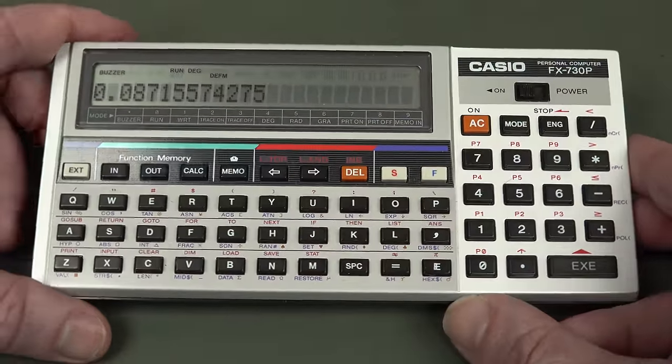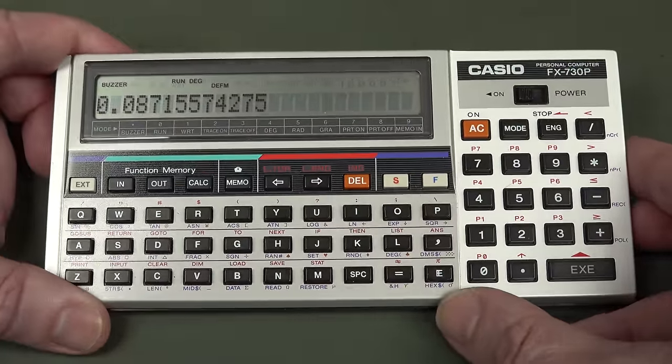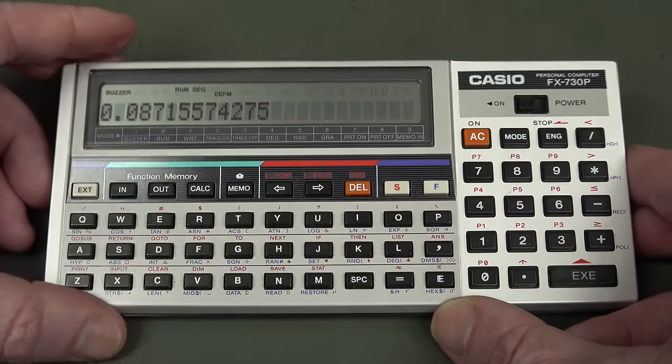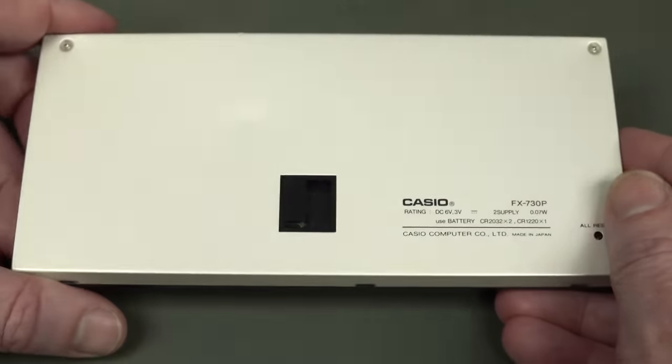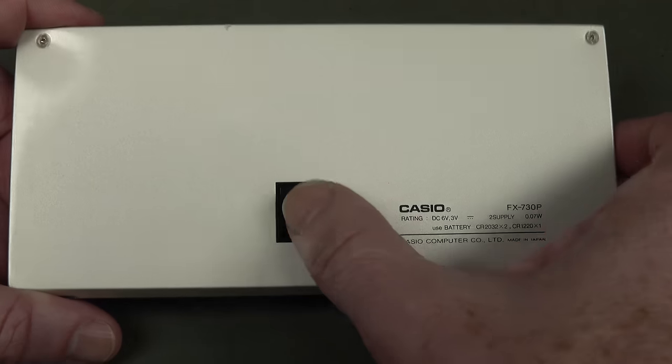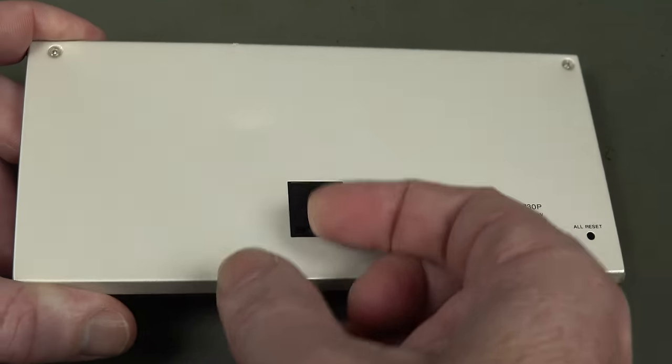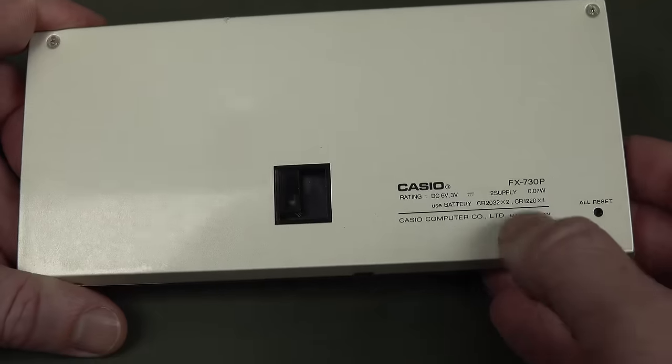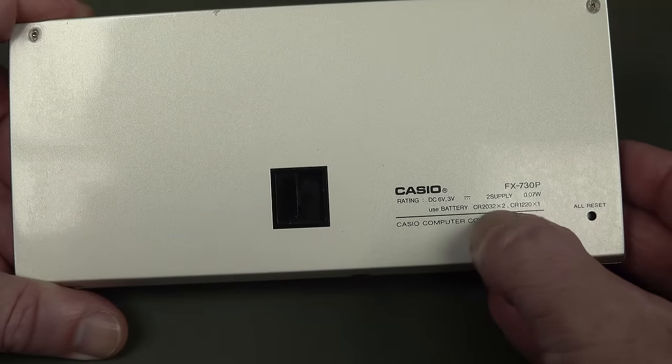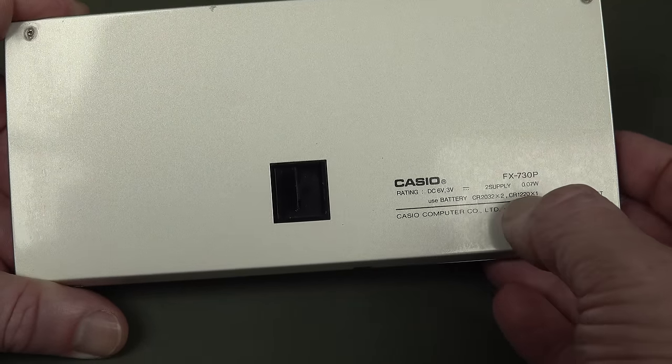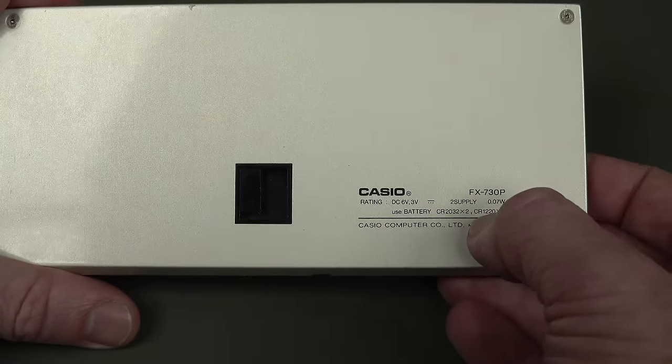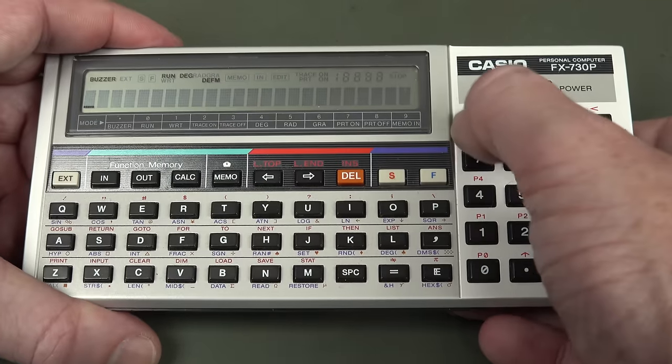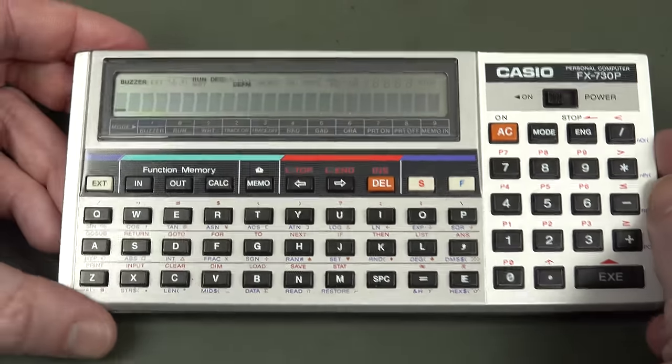It did have 8K built-in. I don't know what version of the basic the Casios used. Was it some sort of Microsoft basic? I don't know. Did they have their own basic? I'd have to check that out. It ran on two CR2032s and one CR1220. That'd be the backup. 70 milliwatts for those playing along at home. So you get a decent battery life out of that baby.